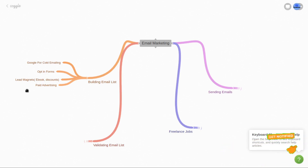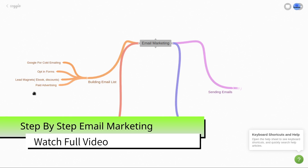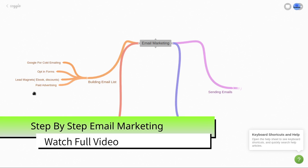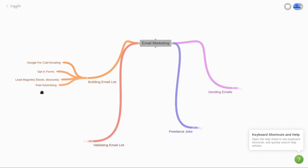You can also do paid advertising for building your email list — on Google or on Facebook with a lead magnet or with a lead generation goal on Facebook Ads — and then you can get a lot of emails added to your email list. That's how you can build your email list. It is very important to build an email list before sending emails.